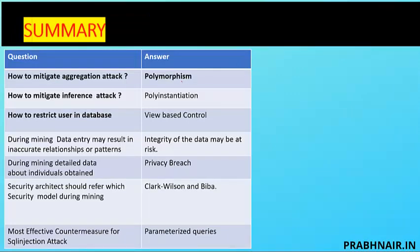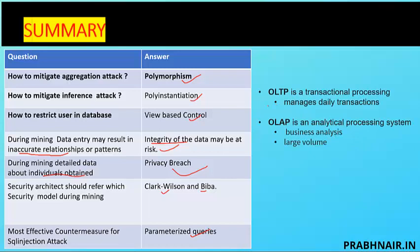High-level summary: if the question asks how to mitigate aggregation attack, answer is polymorphism. If it asks how to mitigate inference attack, answer is poly instantiation — because we create different versions. To restrict users in a database we use view-based controls. Data mining may result in inaccurate data — if the question talks about inaccurate relationships, it's an integrity risk; if it talks about detailed individual data, it's a privacy breach. The preferred security model for databases is Clark-Wilson or Biba because we prefer integrity with separation of duty. The most effective countermeasure for SQL injection is parameterized queries.